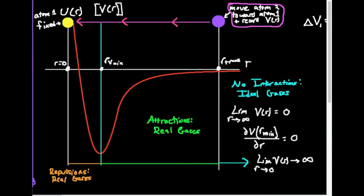What I have here is a potential energy diagram for two charged species. The way I'm going to think about this is this yellow sphere — this yellow atom — is charged, and I'm going to hold it fixed, not allowing it to move. On the right here is another atom, a purple one, another charged species. I'm going to start with it a very large distance away from the yellow fixed atom, and then slowly but surely move the purple atom to the left towards the yellow atom, measuring and recording the potential energy in graphical form as it goes.